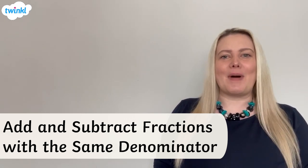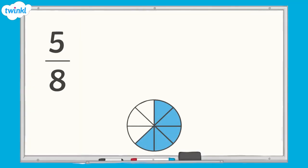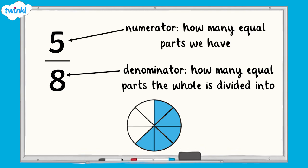Let's have a quick reminder about some fractions vocabulary. The denominator is the number on the bottom of the fraction. It tells us how many equal parts the whole is divided into. The numerator is the number on the top of the fraction. It tells us how many equal parts we have. So for five-eighths, the whole has been divided into eight equal parts and we have five of them.